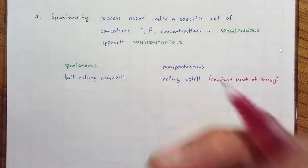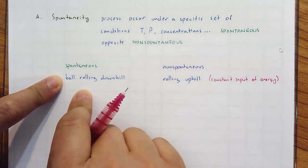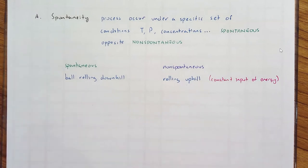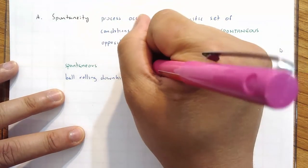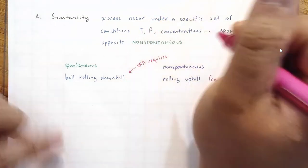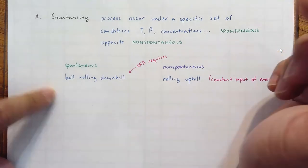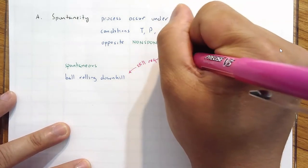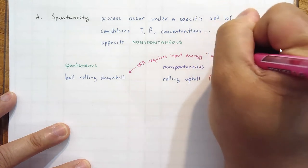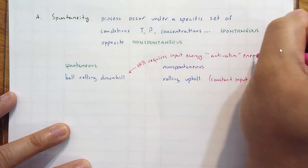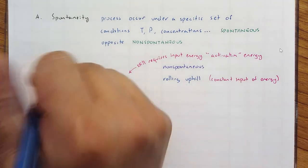Some students struggle with this because you still have to get the ball rolling. Even at the top of the hill, you need to input some energy. There will almost always be some activation energy. Although we're talking about a physical process, not chemical, it still requires some input, which I'll consider activation energy. When deciding spontaneous versus non-spontaneous, don't overthink it.